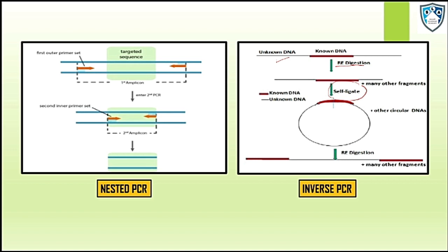If we do the restriction digestion and self-circularize and self-ligate it, then we will see that the known sequence comes in between and we design the two primers in opposite directions such that the known sequence after the restriction digestion of the circular fragment comes at the ends.